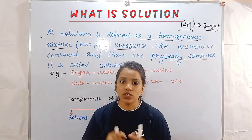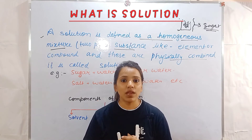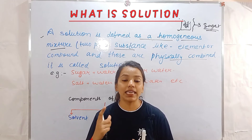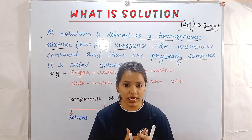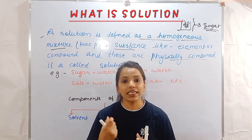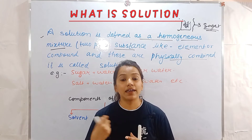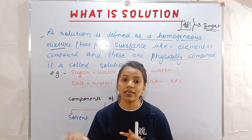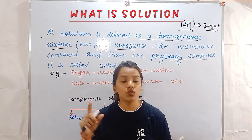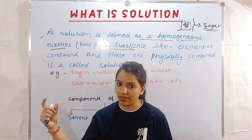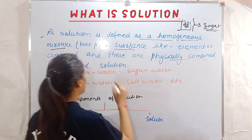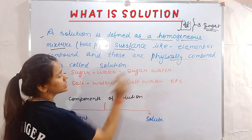Physically combined means that when you combine two substances, you do not get a new product. This is not a chemical process — it is physical. For example, if you make curd, that is a chemical process. But in a solution, the combination is purely physical.